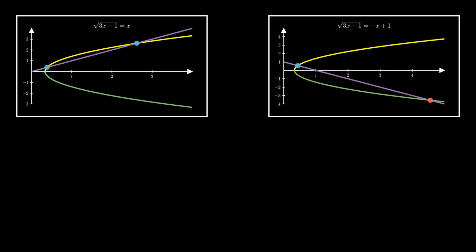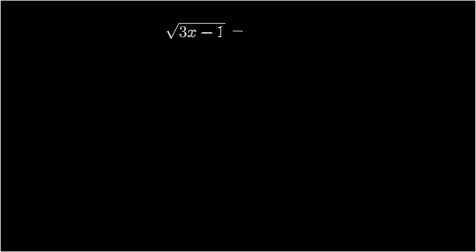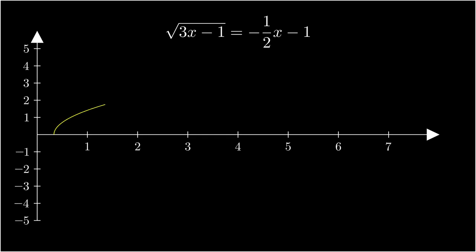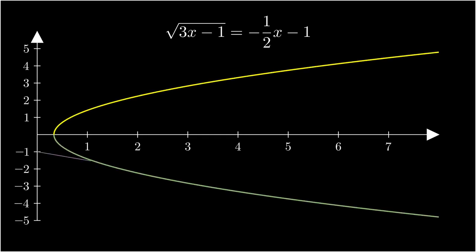You can probably imagine right now what the picture might look like if both solutions were extraneous. We might imagine something like root 3x minus 1 equals negative half x minus 1. We can see that the line y equals negative half x minus 1 hits our bottom reflected curve twice, and never touches the original one on top. Therefore, if we solved algebraically, both solutions would be extraneous.